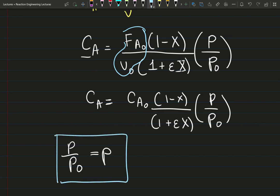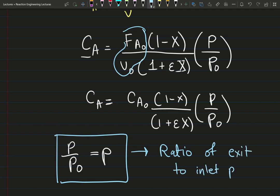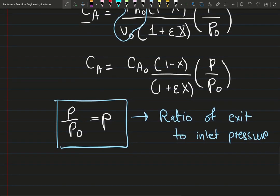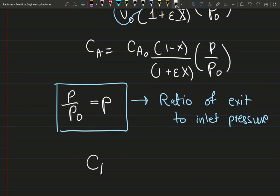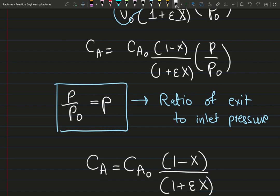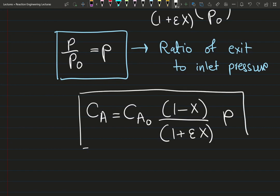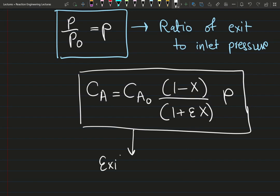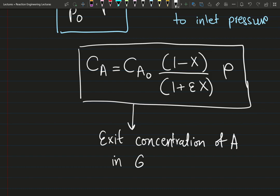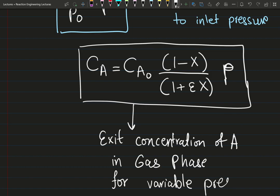Lowercase p is simply the ratio of exit to inlet pressure — nothing fancy. So the exit concentration of species A becomes: C_A = C_A0·[(1 - X)/(1 + εX)]·p. This is the exit concentration of species A in the gas phase under variable pressure conditions. The variation in pressure is accounted for by the lowercase p term.